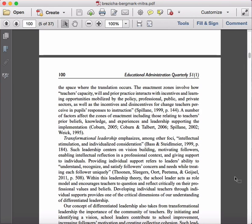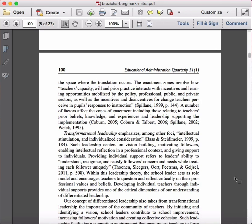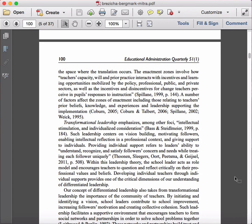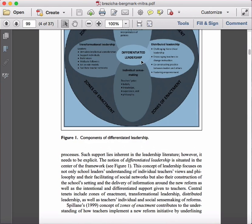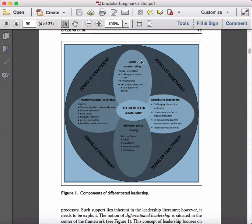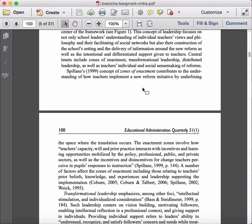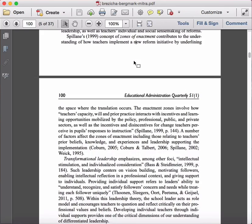So you'll note it does have some consistencies with what we would see in a traditional literature review. For example, they're talking about themes. Now the themes that they're talking about are essentially the different aspects of this differentiated leadership here. So you'll see things like transformative leadership and zones of enactment and social sense-making and distributed leadership and individual sense-making throughout the theoretical framework that we've got here. You can almost think of these as individual topics or individual themes.